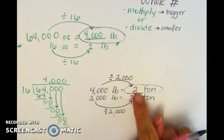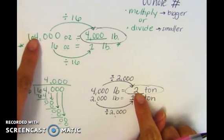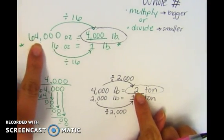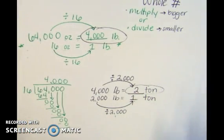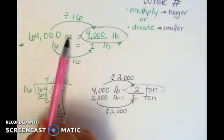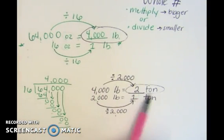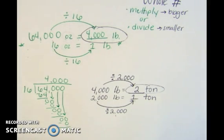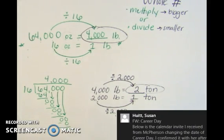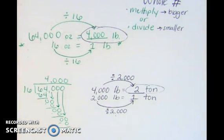Therefore, 2 tons is also the same thing as 64,000 ounces. And that's why we call this converting — because we're just changing the units we're using. But it's still the same amount, the same quantity of weight, or the same quantity of liquid, or the same quantity of distance or length. I really hope this video helped. If you need to hear it again, please go back and watch it again. Pause it where you need to pause it. Thank you.